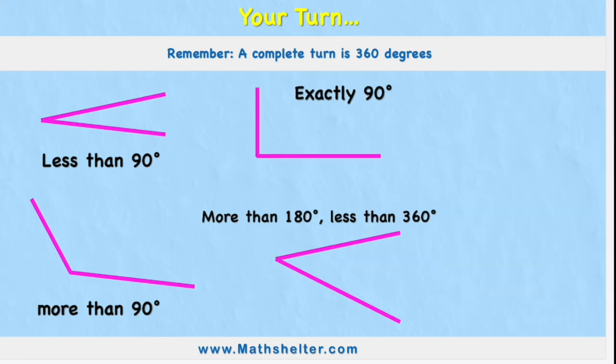So your turn. Can you remember the four names of these angles here? An angle that's less than 90 degrees, an angle that's exactly 90, an angle that's more than 90 but less than 180, and an angle that's more than 180 but less than 360. Put your answers in the comment section. I want to try and look at them all.